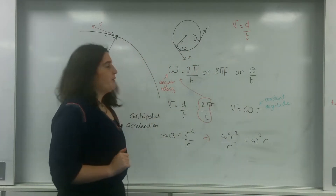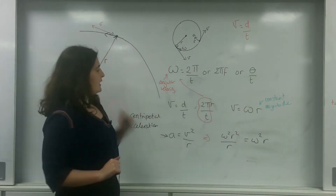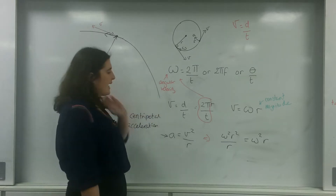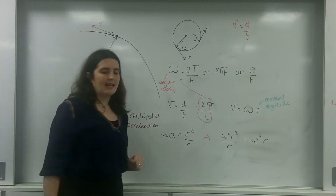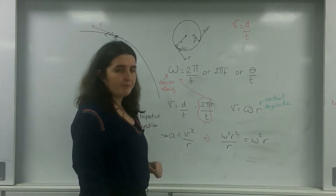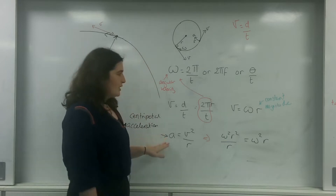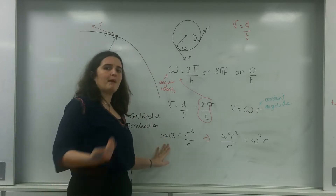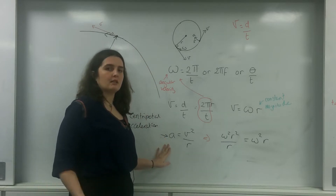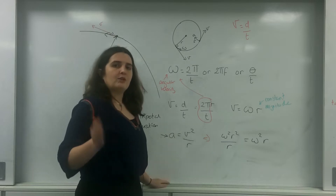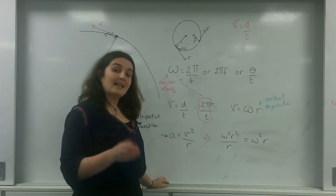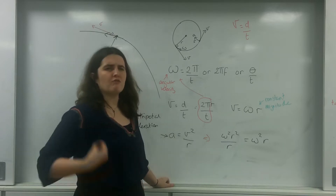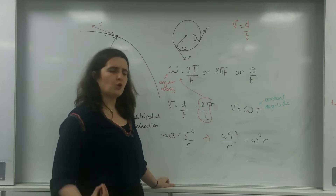In previous videos I have spoken about angular velocity and I've also spoken about tangential speed or velocity and the acceleration. And just to recap, this acceleration is the thing that is causing you to go back into the circle. And Newton's second law states, for there to be an acceleration, there must be a resultant force.